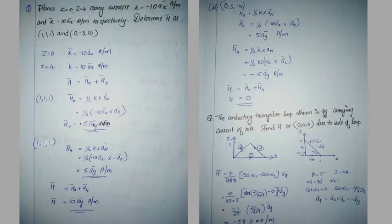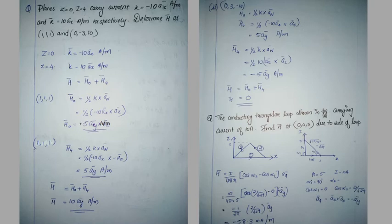The summation is h0 plus h4. Adding 5 plus 5 gives a direct summation because it is uniform, resulting in 10 ay amps per meter. For the case at (0,3,-10), h0 uses half K cross az giving minus 10ax, and h4 gives minus 5ay cap amps per meter. The final answer for that point is 0, 3, minus 10.